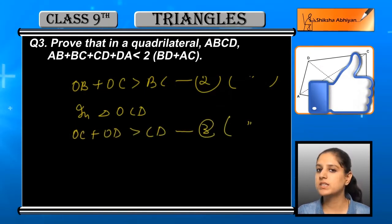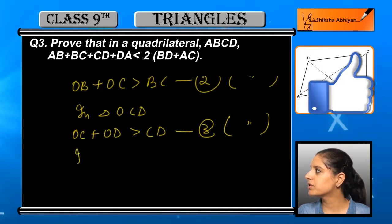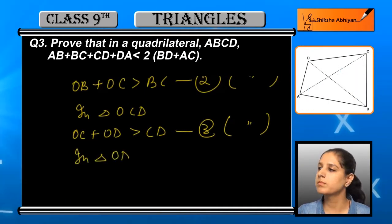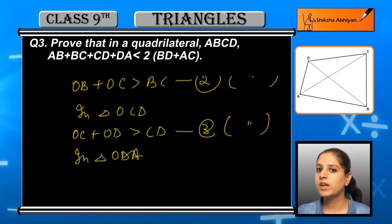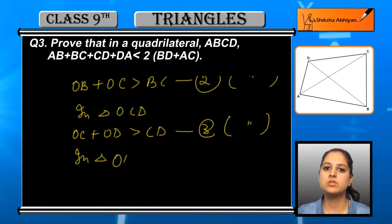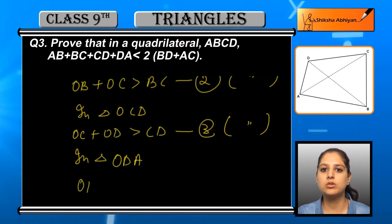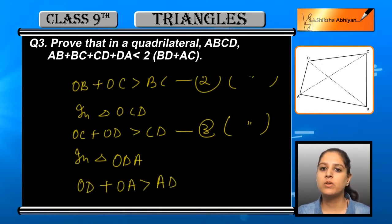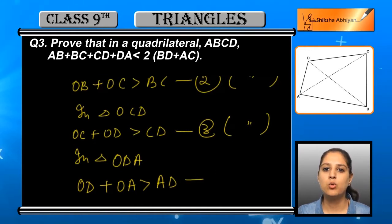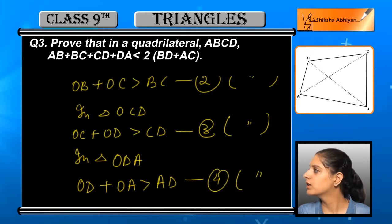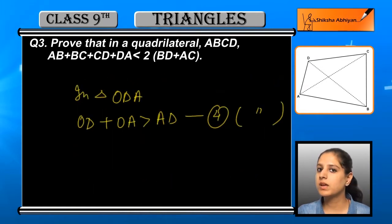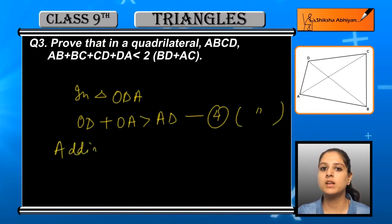For the fourth triangle ODA, we have OD plus OA is greater than DA. This is equation number 4. The reason is the same — the sum of two sides of a triangle is greater than the third side.